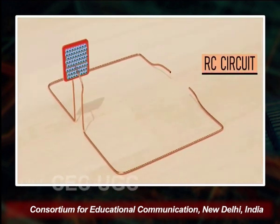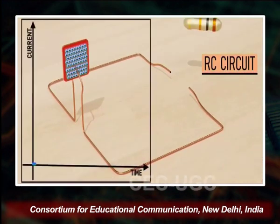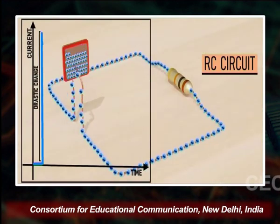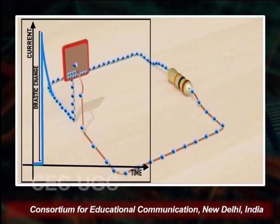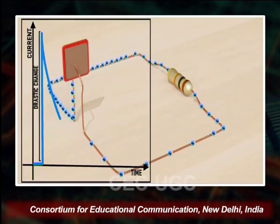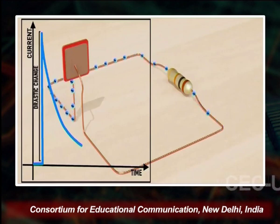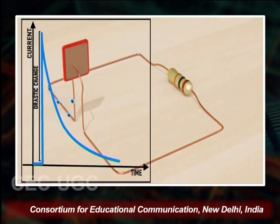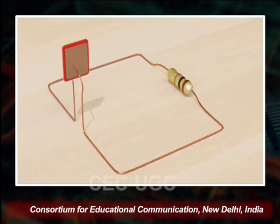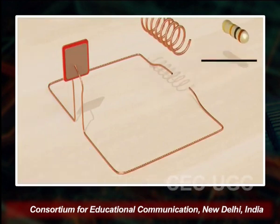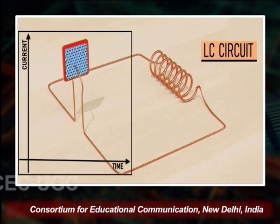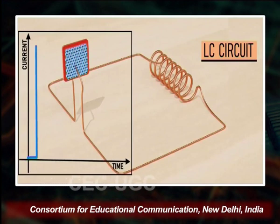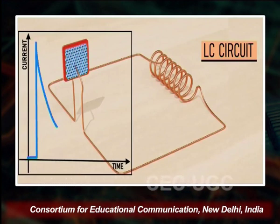When we replace the inductance with the LC circuit and remove the RC circuit, we can see the current versus time graph for the LC circuit.